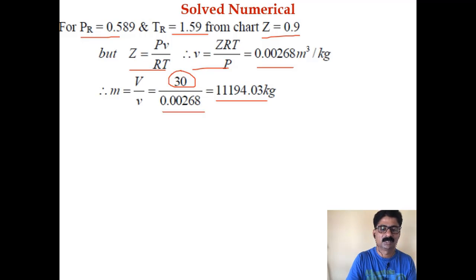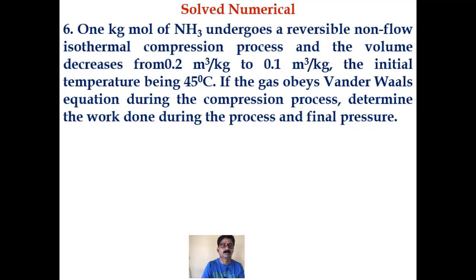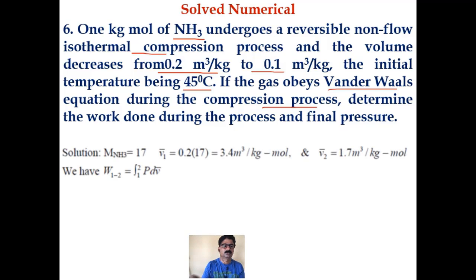Now one kg-mole of ammonia undergoes a reversible non-flow isothermal compression process and the volume decreases from 0.2 cubic meters per kg to 0.1 cubic meters per kg, the initial temperature being 45 degrees Celsius. If the gas obeys Van der Waals equation during the compression process, determine the work done during the process and final pressure.